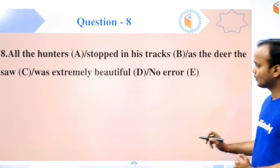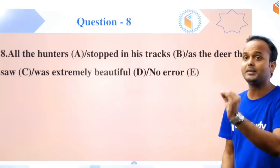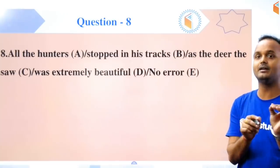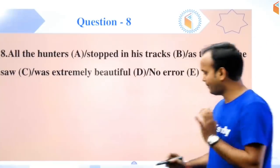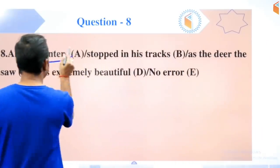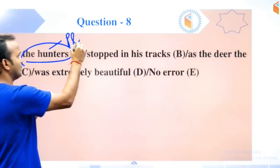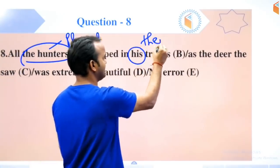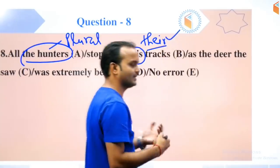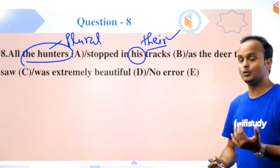Question number eight: 'All the hunters stopped in his tracks as the deer they saw was extremely beautiful.' We're talking about hunters, and how are they? Plural. When they're plural, we shouldn't give a singular pronoun. What should come? 'Their' should come, because we need a plural pronoun. This was question number eight.